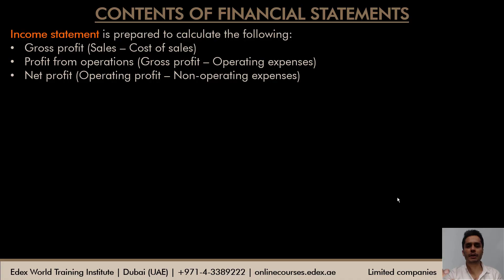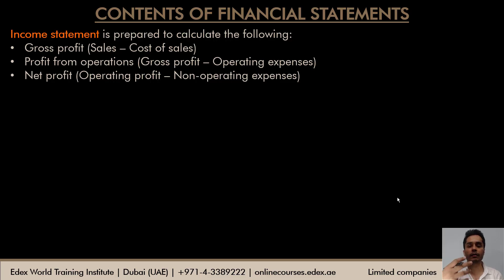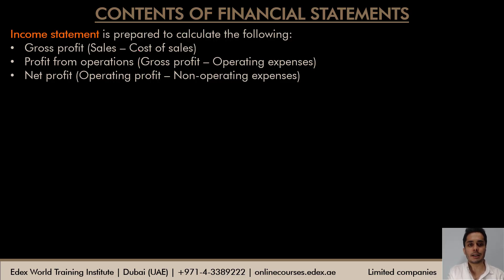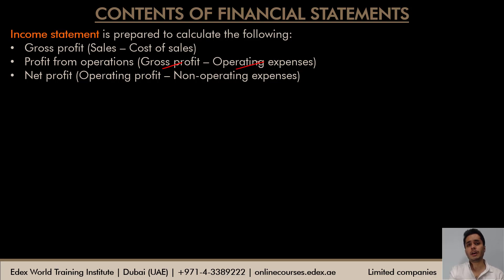The first statement we prepare under financial statements for limited companies is the income statement, which calculates profit or loss. It first calculates gross profit, then operating profit or profit from operations, and then net profit. Gross profit is sales minus cost of sales. From gross profit, subtracting all operating expenses gives profit from operations. Then deducting non-operating expenses gives the net profit for the year.